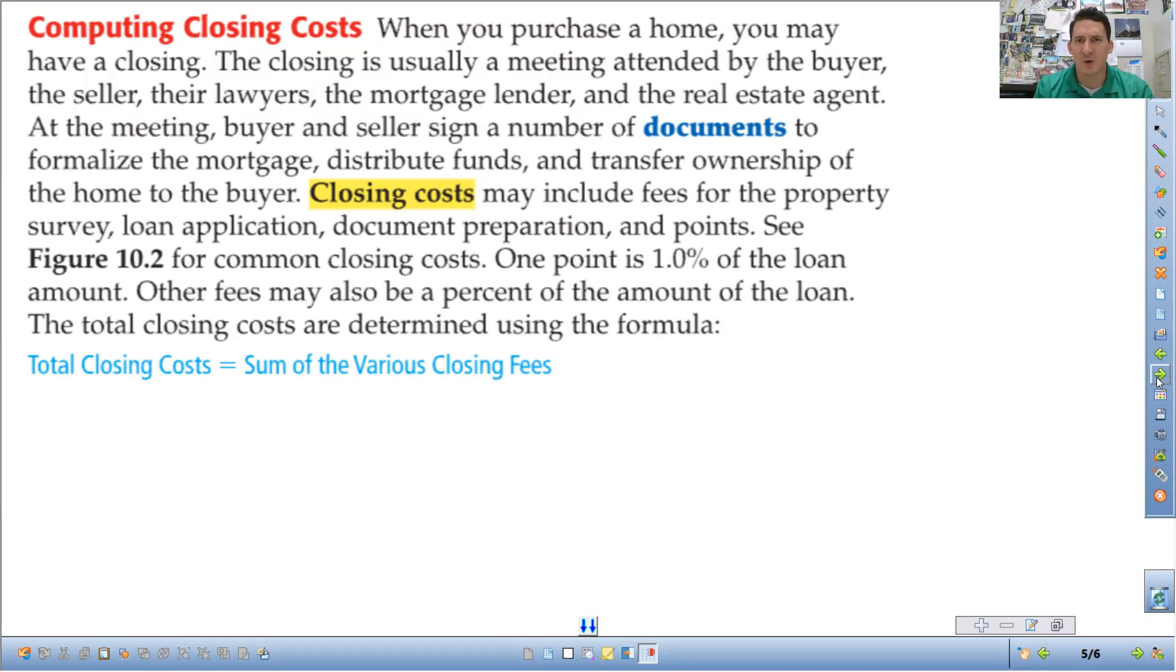So in the book here, it says when you purchase a home, you may have a closing. The closing is usually a meeting attended by the buyer, the seller, their lawyers, the mortgage lender, and the real estate agent. No, it is not. I have bought two homes, I have sold a home, not in any of those three transactions. I have never met the seller when I bought a home or the buyer when I sold a home.